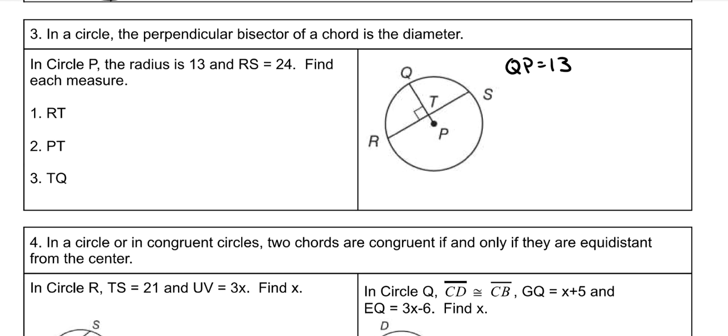So RT right here is half of RS. So in other words, to figure that out, we just do RS divided by 2, which is 13 divided by 2, which would be, oh, sorry, 24. The radius is 13. 24 divided by 2, which means that RT is 12.